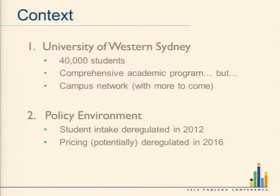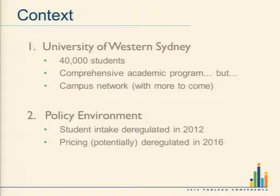In Australia we're going through fairly rapid deregulation of the sector. Before 2012, the price was set by the government — everyone got charged the same fee to go to university, regardless of which university you went to anywhere in the country. It was a fee you could defer on a government debt, so no one had to pay up front if they didn't want to. That's for domestic students obviously — international students have to pay a lot, which cross-subsidises all that.